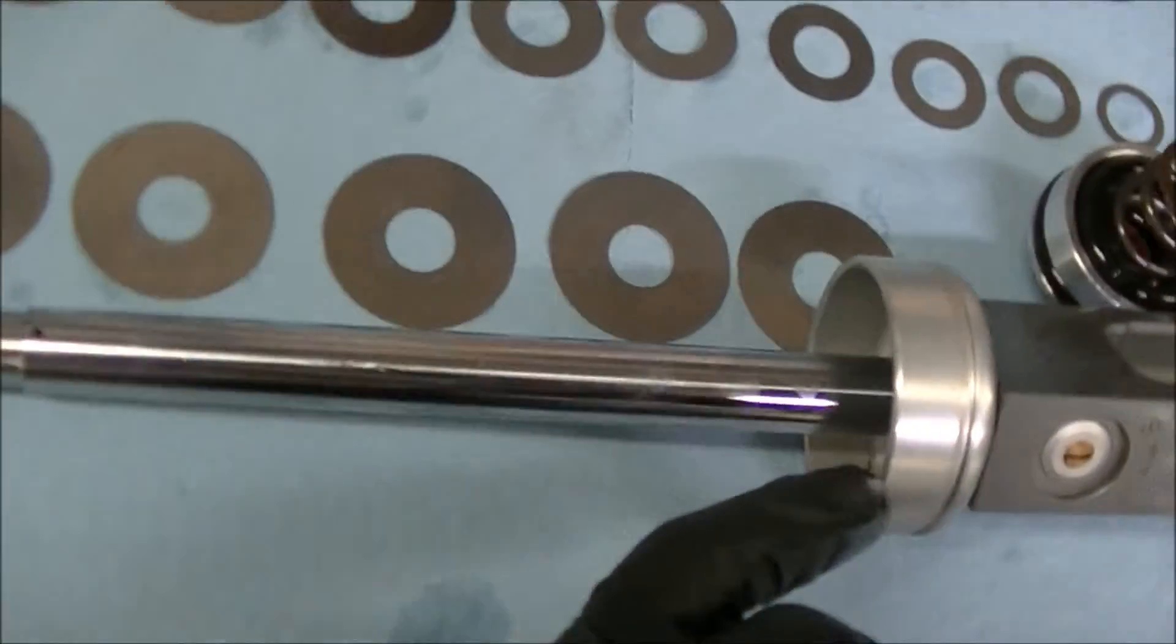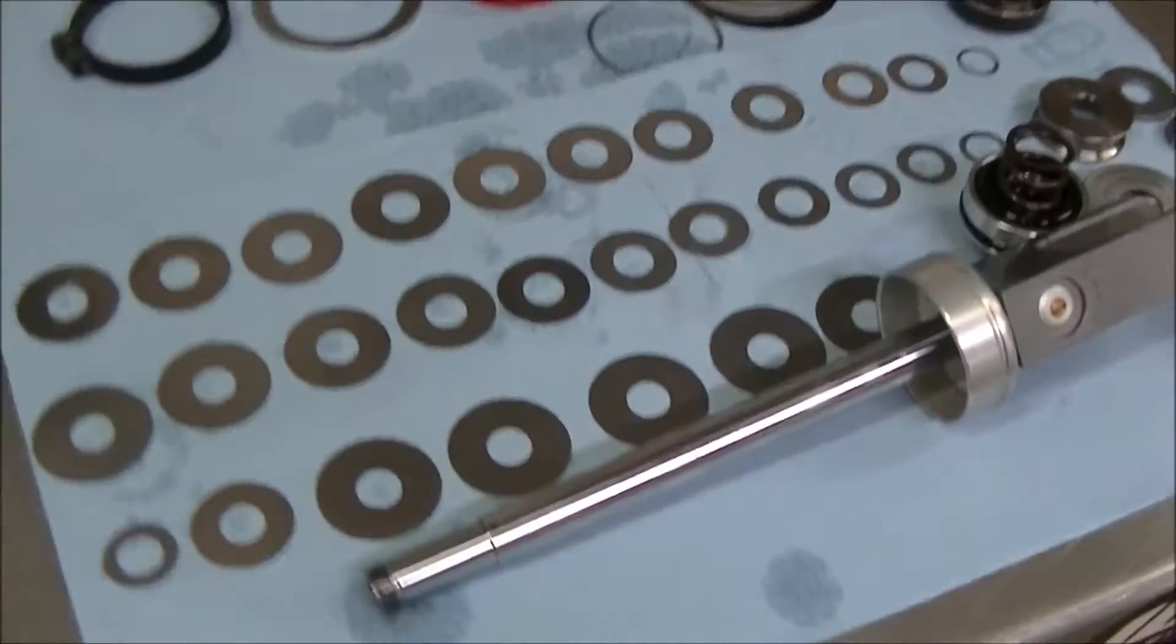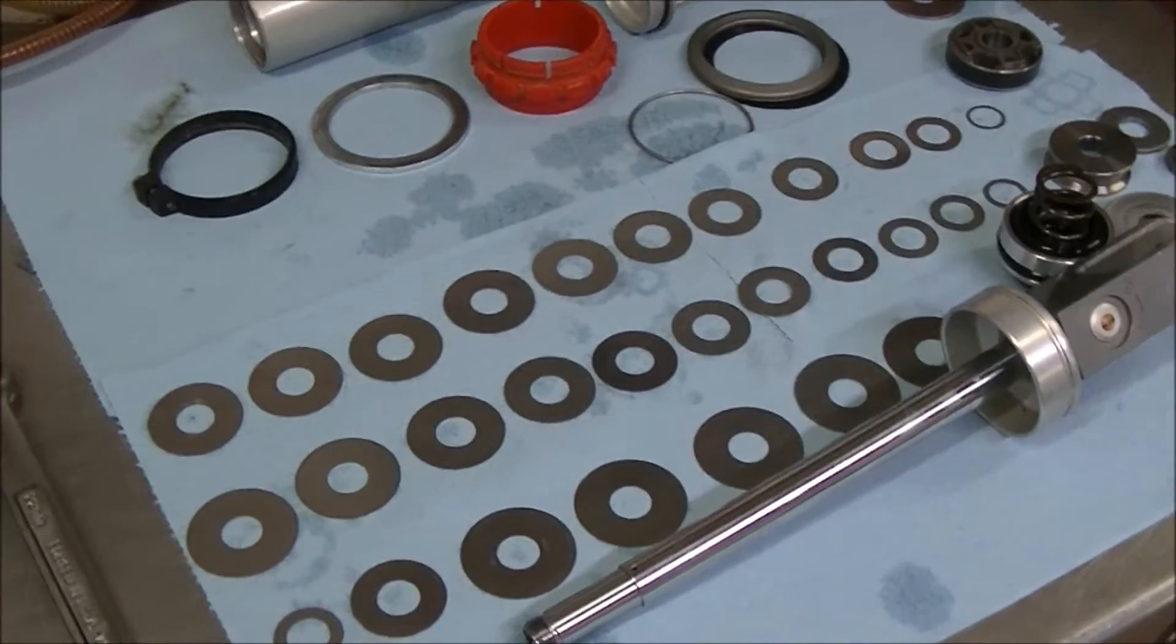And this is the cup which actually the bottom out bumper sits in. So that's kind of just a little bit of what exactly is on the inside.